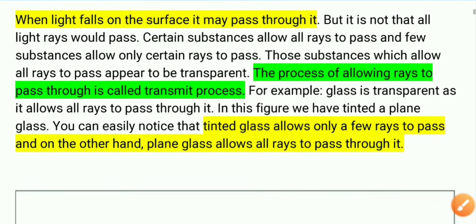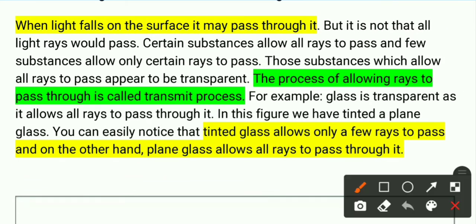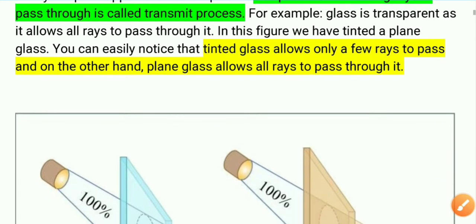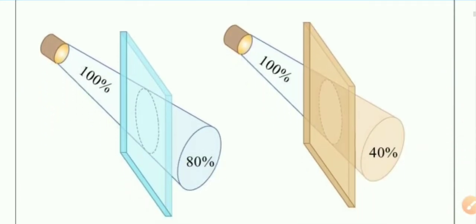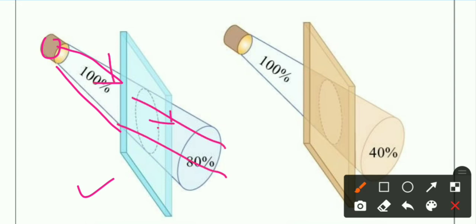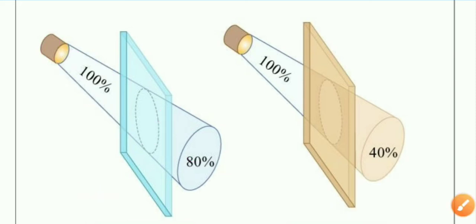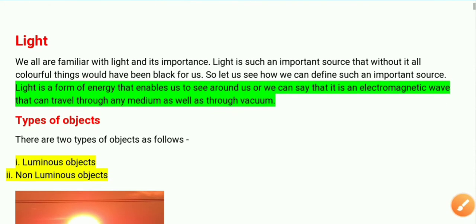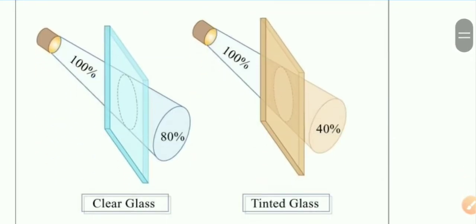The second case is when light falls on a surface and passes through it. So here we have a surface, and when we fall light on it, the light passes through the surface. This process is called transmission. For example, glass — when light is applied to glass, about 80% of it passes through. This also applies to tinted glass, where partial transmission occurs.